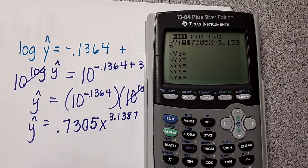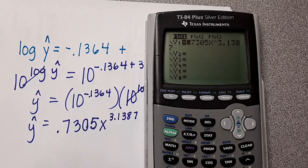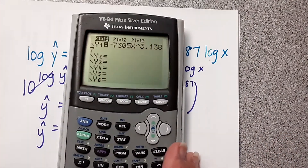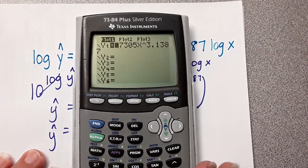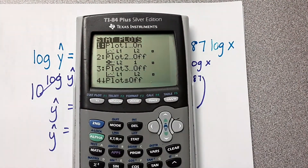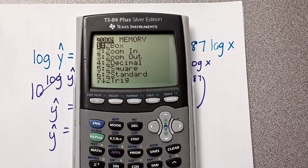Let me show you what I did — and you don't have to do this, I'm just showing you. I don't want you to get so wrapped up in the calculator. I went into my calculator, into the y-equals, and typed in the equation that I just transformed. Then I went into second y-equals and I'm going to graph it against my original data — we've gone back to our original data. We did the logarithms, we did the line, we did all of that. And now I want to do a zoom nine.